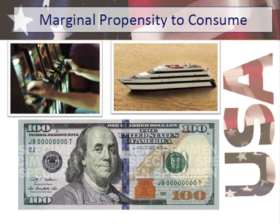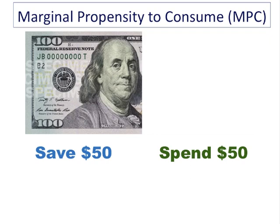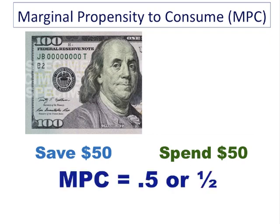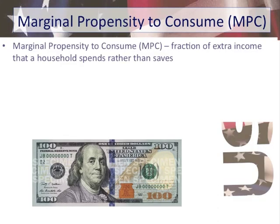In economics we have something known as the marginal propensity to consume. The 'margin' refers to the units of currency — in this case a hundred dollars. 'Propensity' means likelihood, and 'consume' means to spend the money. So: what is the likelihood that I will spend a fraction, if not all, of this money? If I spend $50 and save $50, my marginal propensity to consume would be 0.5.